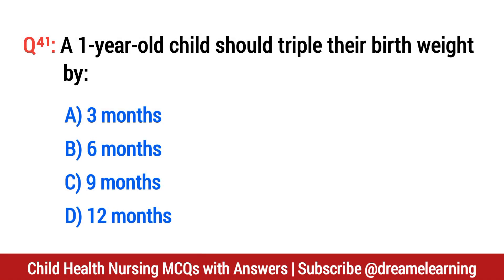Question number 41. A child should triple their birth weight by? The right option is D: 12 months.